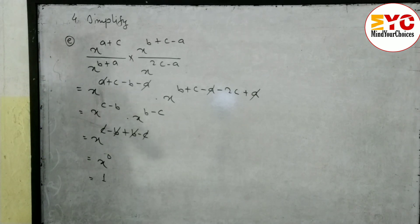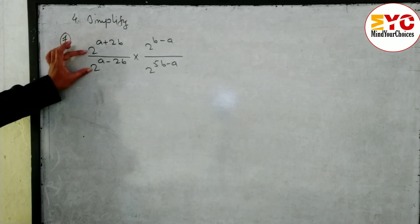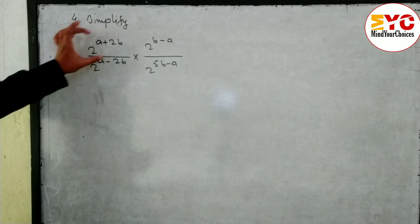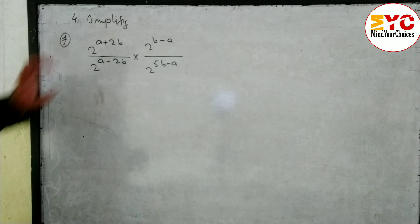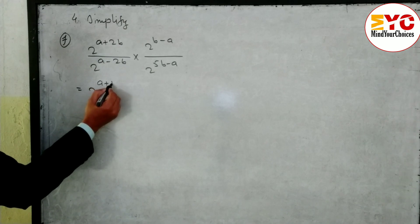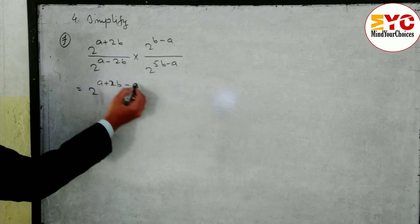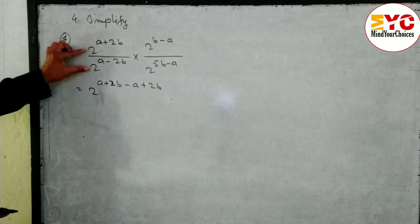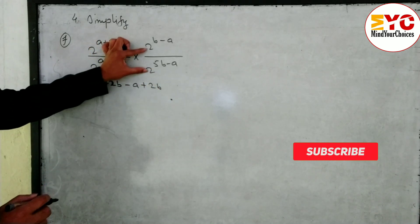Now look at question number (f). In this question, numbers are given as the base — base is 2, not a variable. Powers are (a+2b) and (a minus 2b). Base same, in divide subtract the power: write 2 power (a+2b), then minus a — since plus a becomes minus a — and plus 2b — since minus 2b becomes plus 2b. Change the sign.